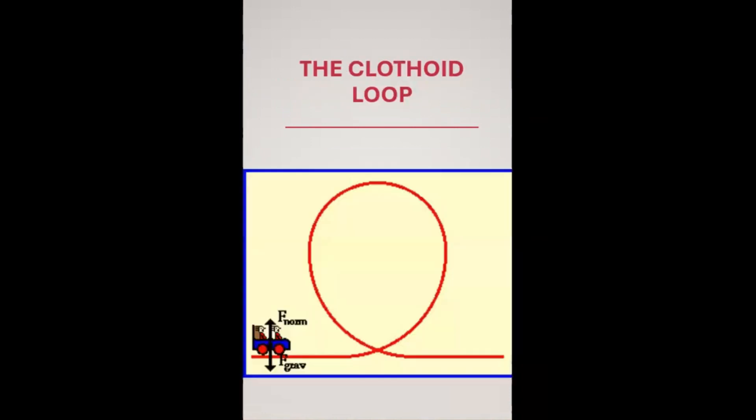Hence came a new shape called the clothoid. The shape of the loop is called clothoid, which is also called the inverted teardrop and is characterized by continuously changing radius, which creates a spiral-like appearance. This means that the curvature of the loop gradually changes rather than maintaining a constant radius as seen in circular loops.